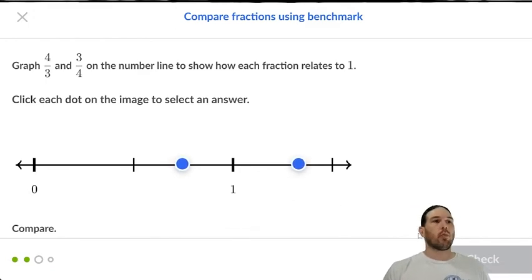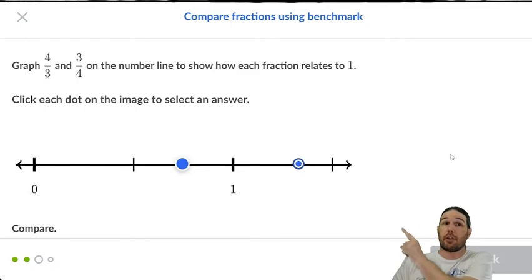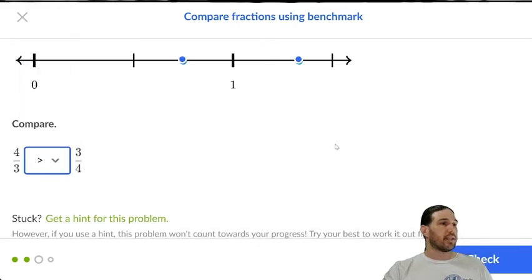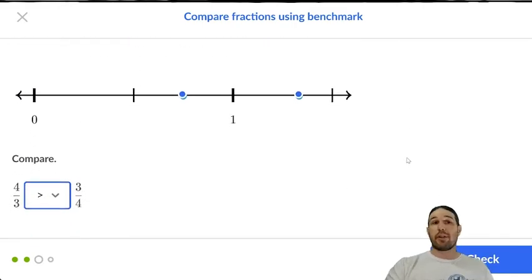Okay, once again, we are graphing four-thirds and three-fourths to show how each one relates to one. I know that because four-thirds has four pieces, each of which is a third of a shape, it's going to take more than one shape to show all of those pieces. So four-thirds is going to be greater than one. It's going to be to the right of one, which means that three-fourths is going to be to the left of one, so four-thirds is greater than three-fourths.